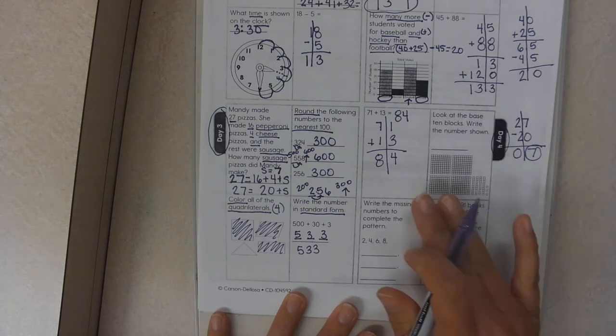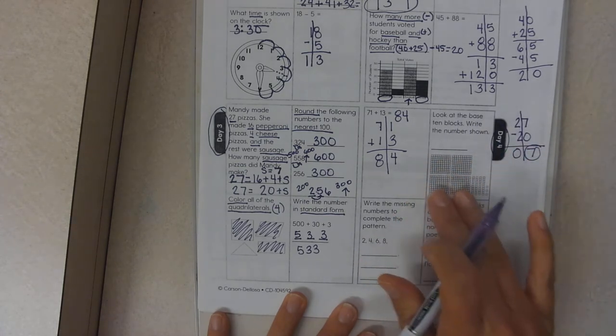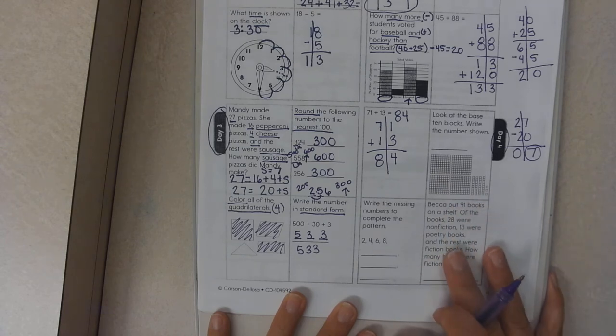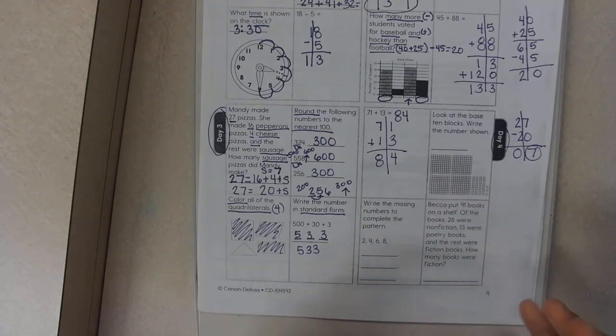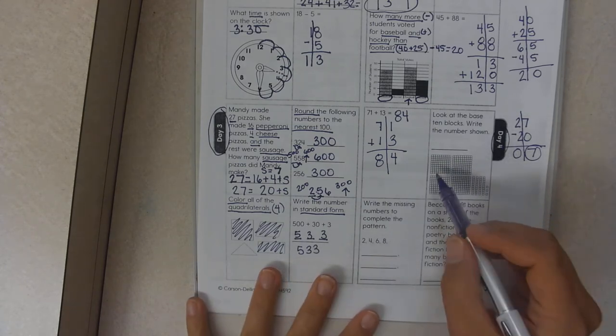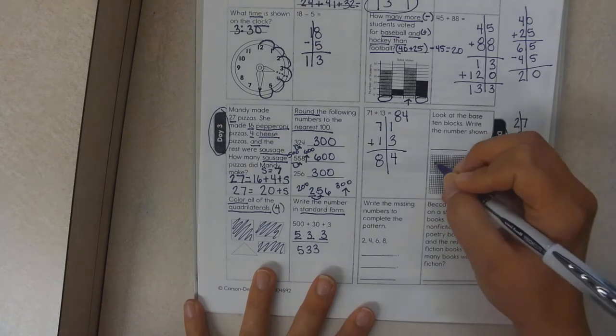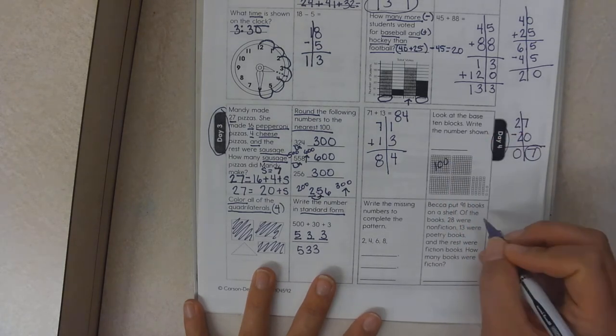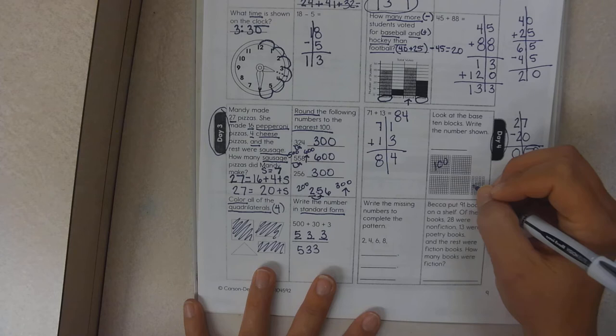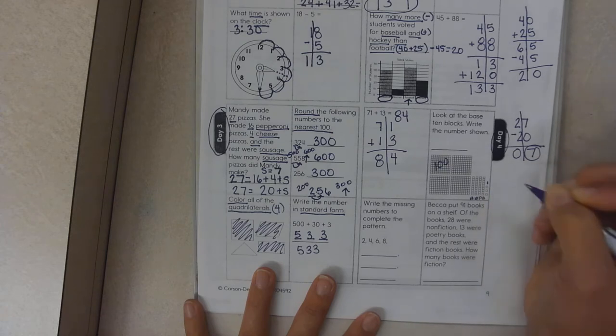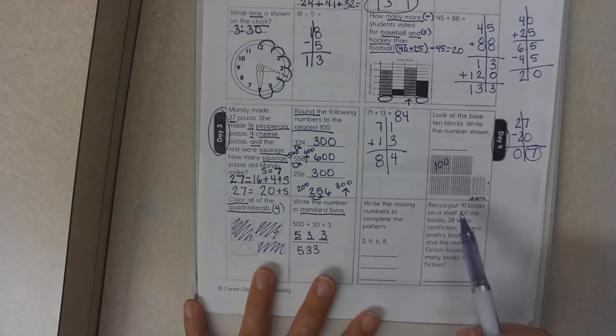Look at the base ten blocks. These are base ten blocks. If you have ever played with base ten blocks, you can feel them and you can maneuver them. These blocks are worth ten tens or 100. These blocks are worth ten units, so each of these are worth 10, and each of these are worth one.